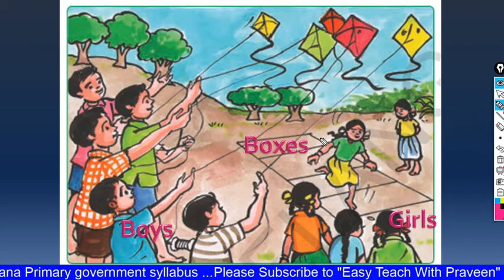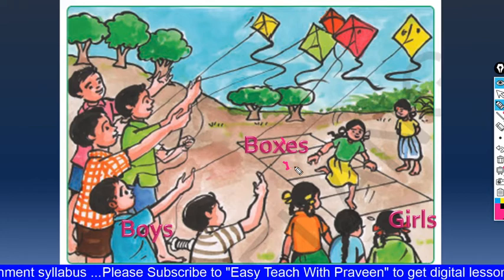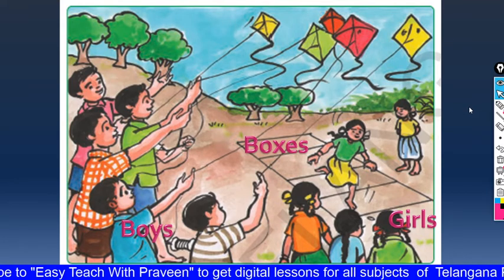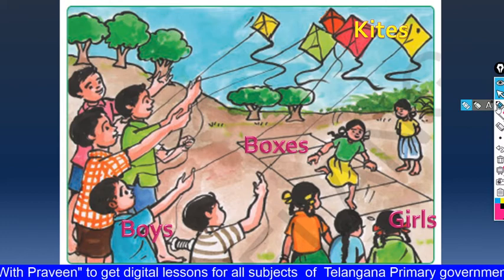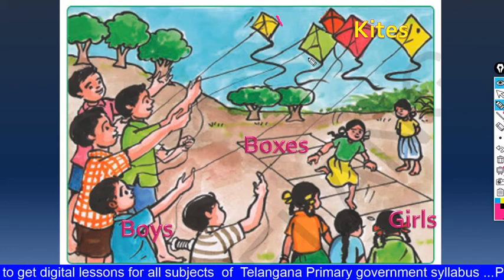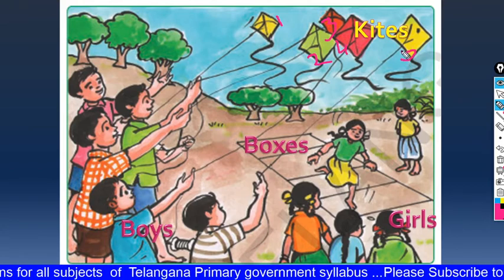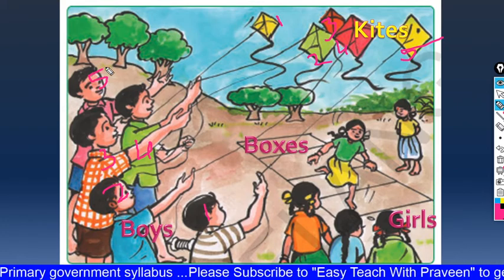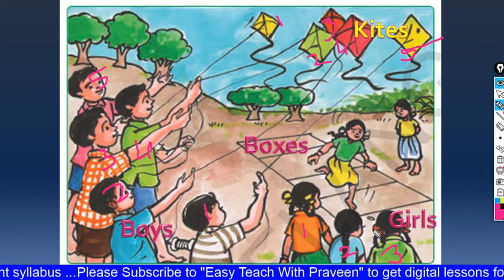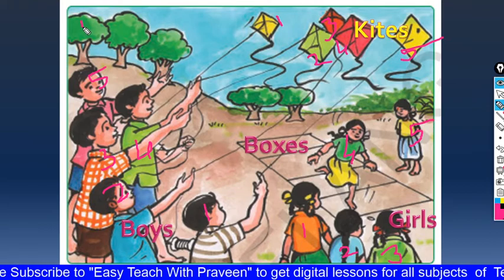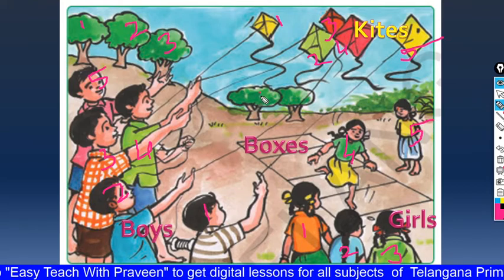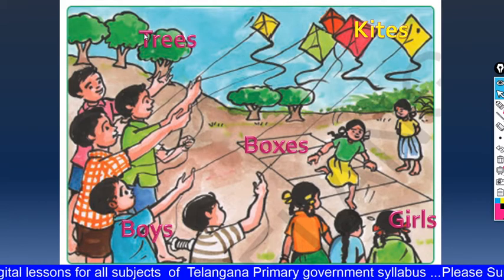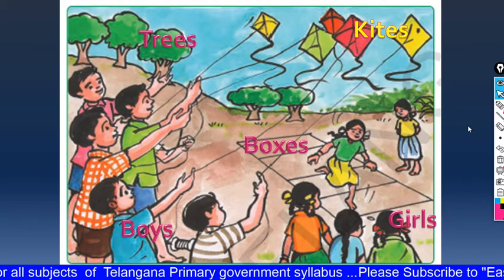Here you can see the boxes — one, two, three, four boxes are there, only four boxes. And kites are there. How many kites are there? One, two, three, four, five. Boys, how many? One, two, three, four, five. How many girls are there? One, two, three, four, five. How many trees are there? One, two, three, four, five.